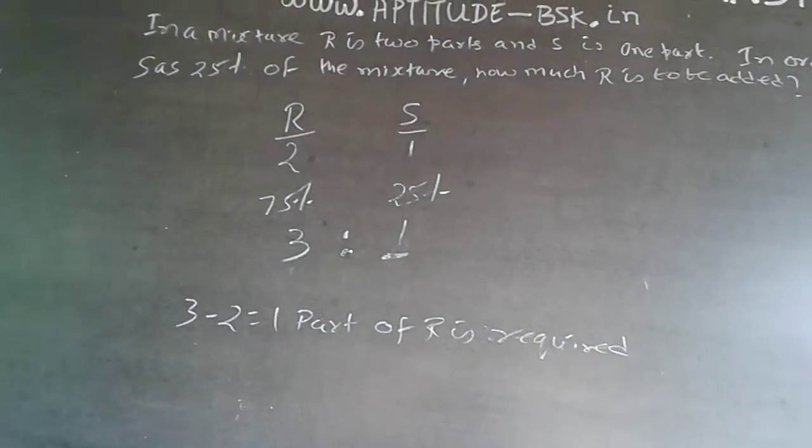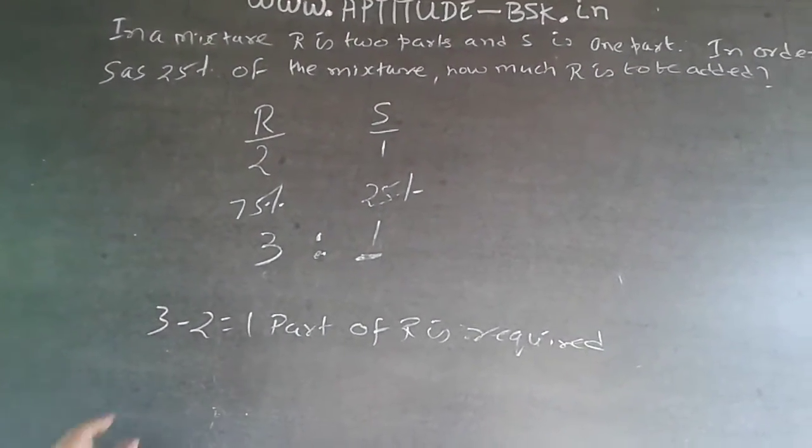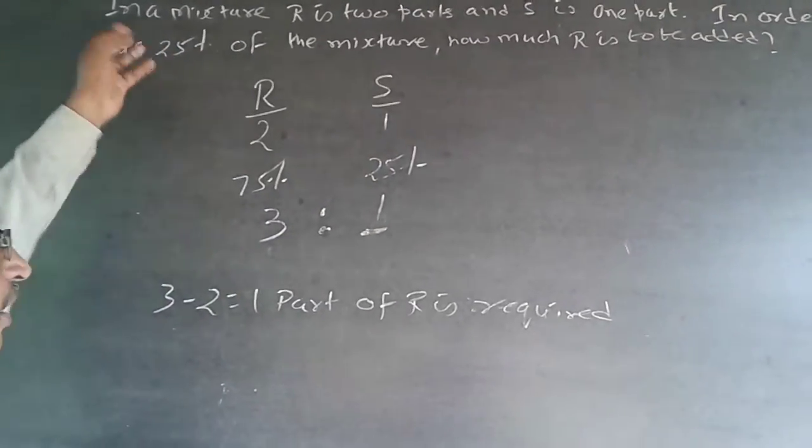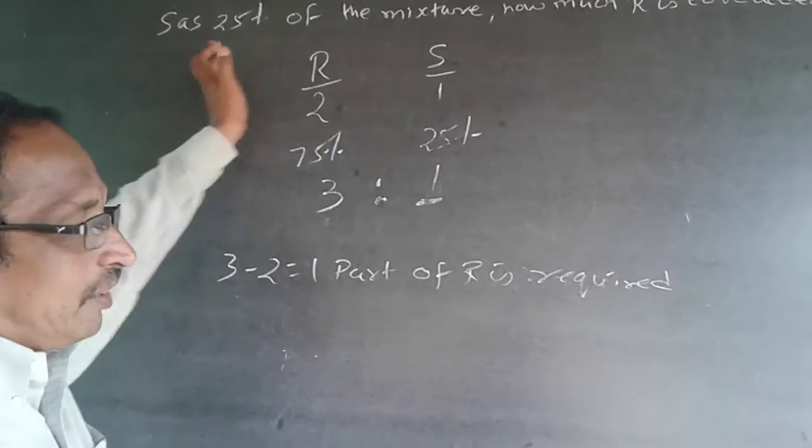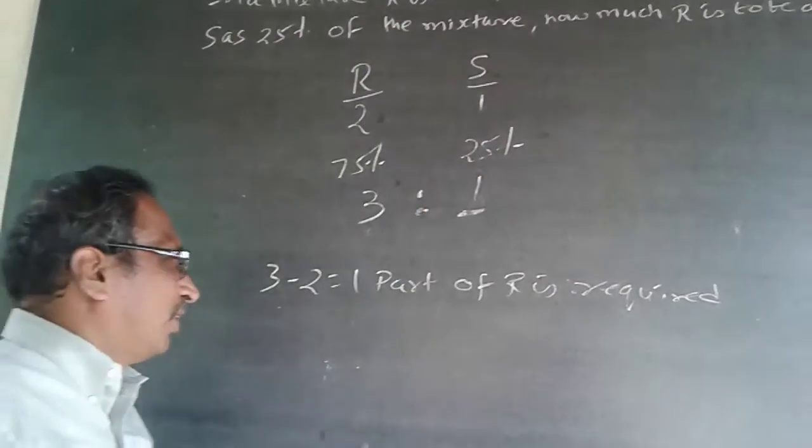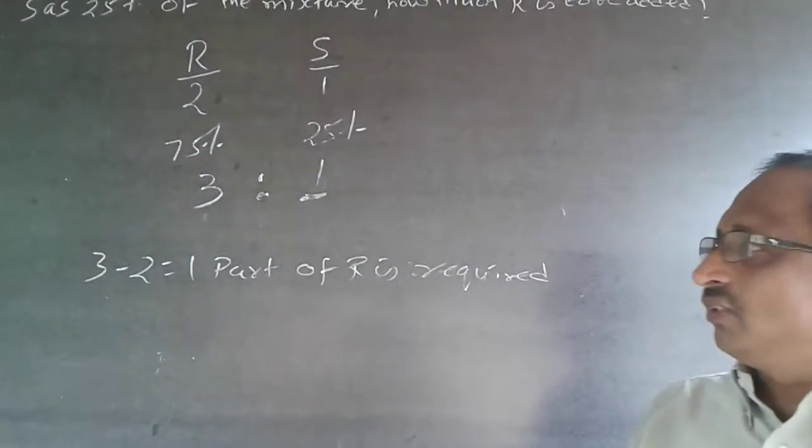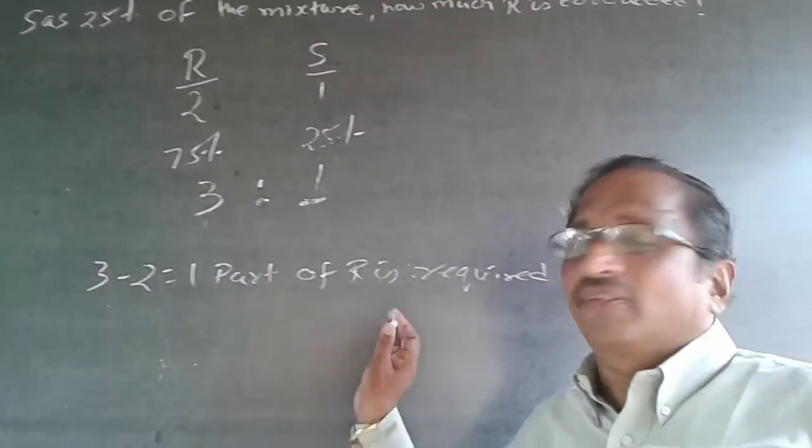In case you want it in percentage, you will have to be very careful, because you have to give 50% of existing R or 33% of the existing mixture. So be very careful. But the answer is 1 part of R is required.